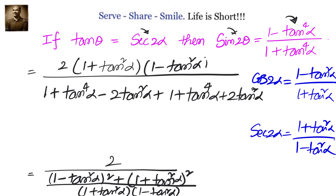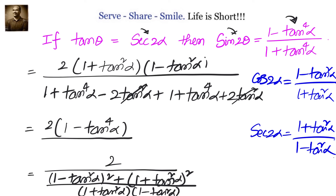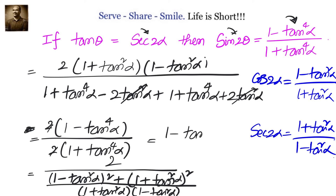We can see that the 2 tan² α terms cancel out. We are left with 2 times (a + b)(a − b) = a² − b², so the numerator is 2(1 − tan⁴ α). We cancel the common factor of 2, and we get our answer: (1 minus tan⁴ α) divided by (1 plus tan⁴ α).